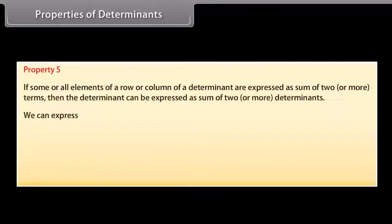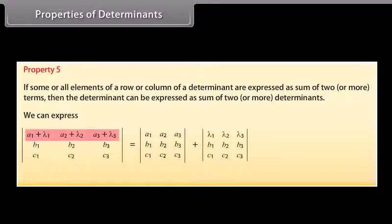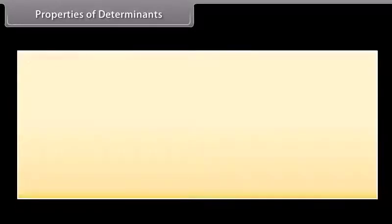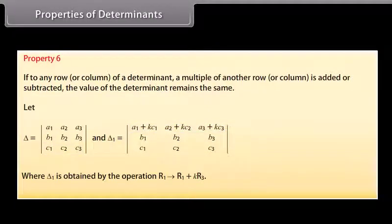Property 5 — If some or all elements of a row or column of a determinant are expressed as a sum of two or more terms, then the determinant can be expressed as a sum of two or more determinants. Property 6 — If any row or column of a determinant has a multiple of another row or column added or subtracted, the value of the determinant remains the same.